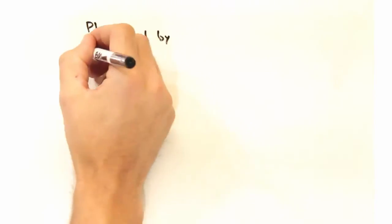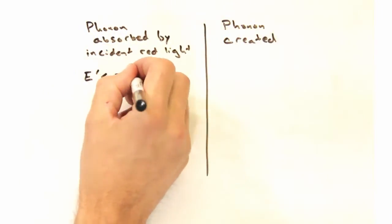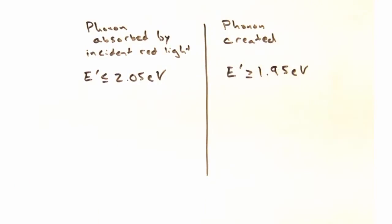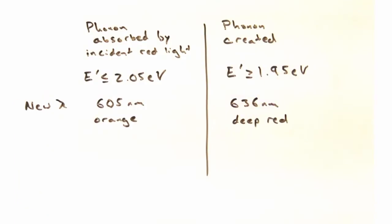So let's split this then into two columns. Either a phonon being absorbed by the incident red light, increasing the energy of the red light therefore, or the red light creates a phonon as it passes through the sample and lowers the energy of the light.